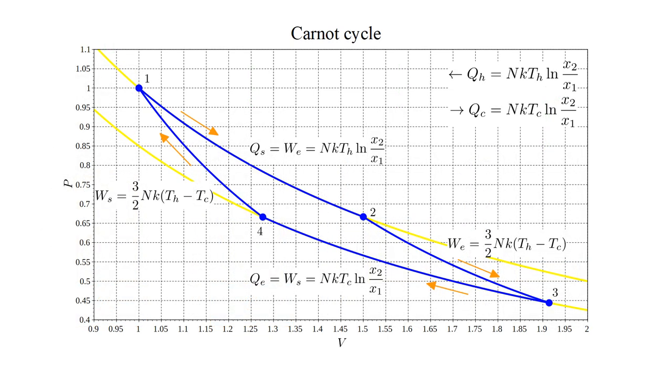On a PV diagram, the cycle begins in the upper left, at state one. Isothermal expansion takes the system to state two. Heat QS is transferred to the system and converted to work WE done on the environment, equal to NKT hot natural log X two over X one.